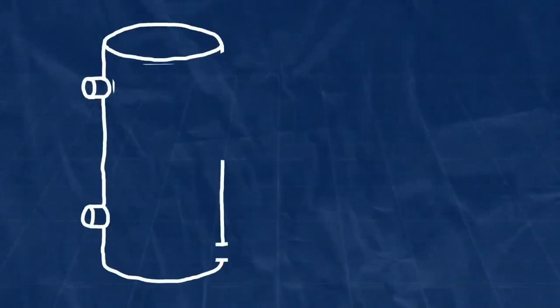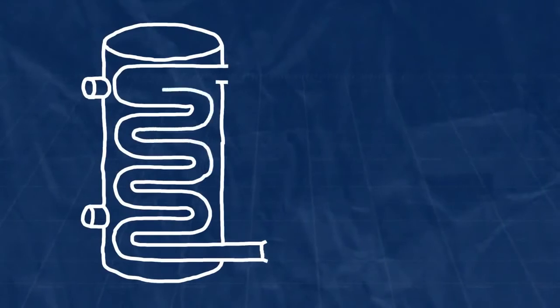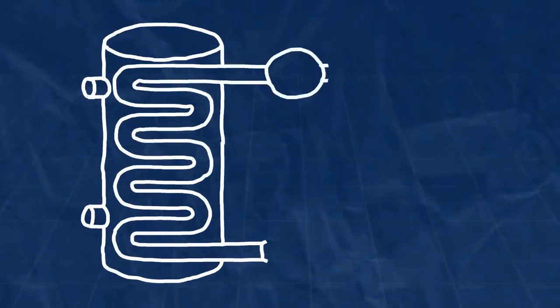This animation illustrates how a heat pump operates. Generally speaking, a heat pump transfers heat from the air in the room to the water in the tank with the aid of a substance called a refrigerant.